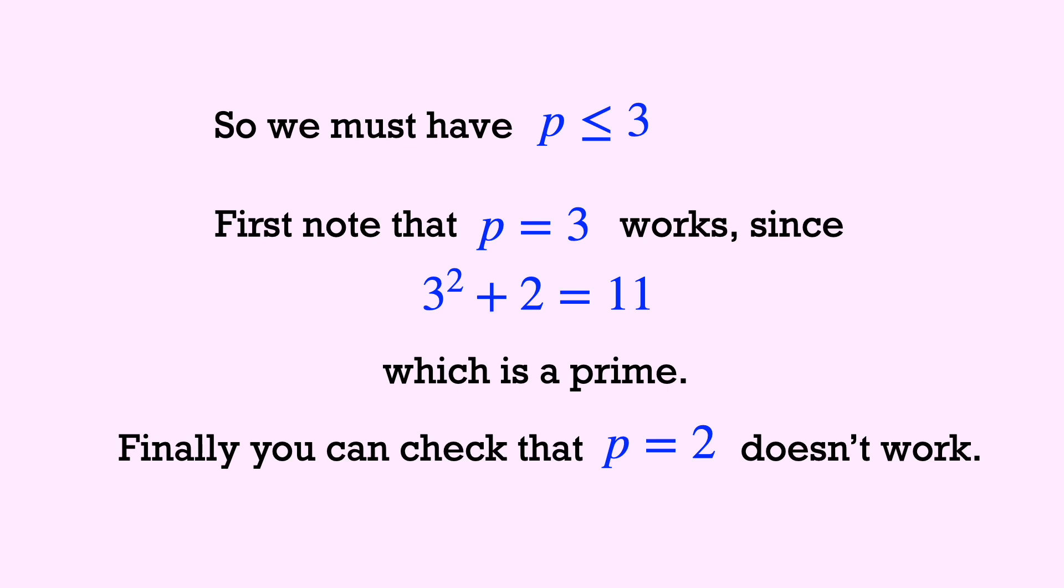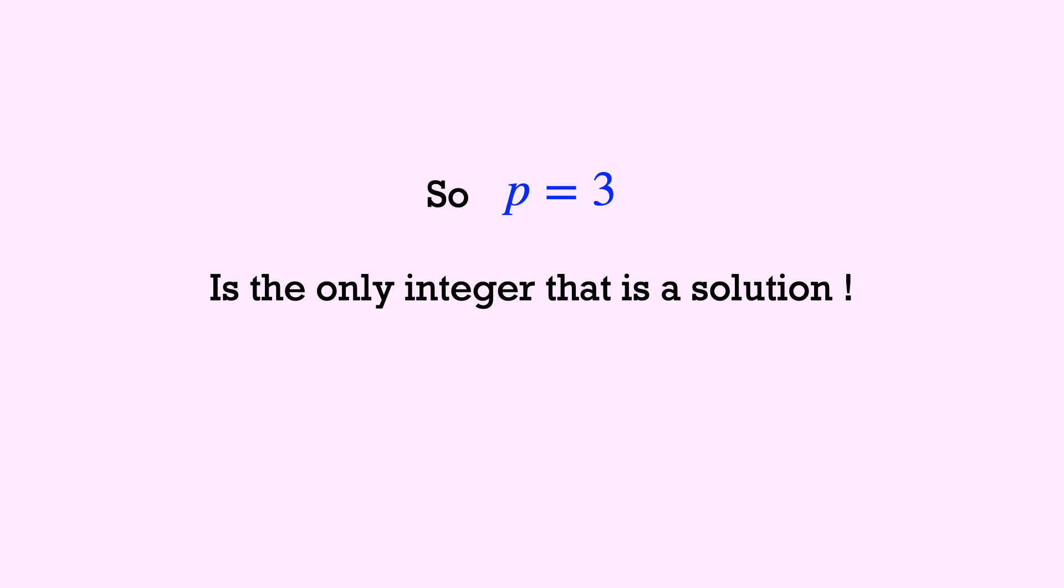We can check that p equal to 3 works since 3 squared plus 2 is equal to 11, and that's a prime. And you can check that p equal to 2 doesn't work. So p equal to 3 is the only integer that's a solution.